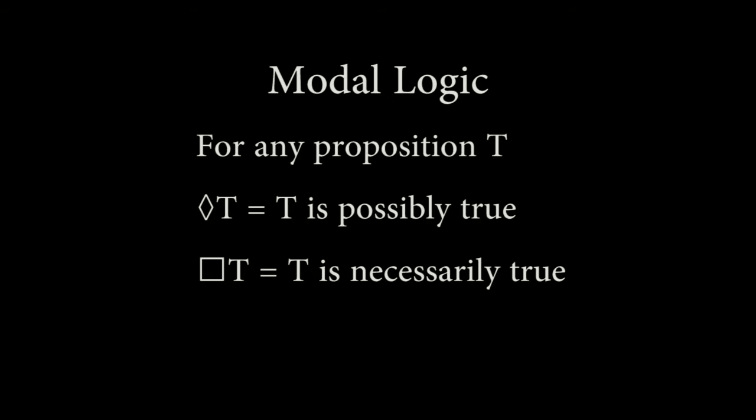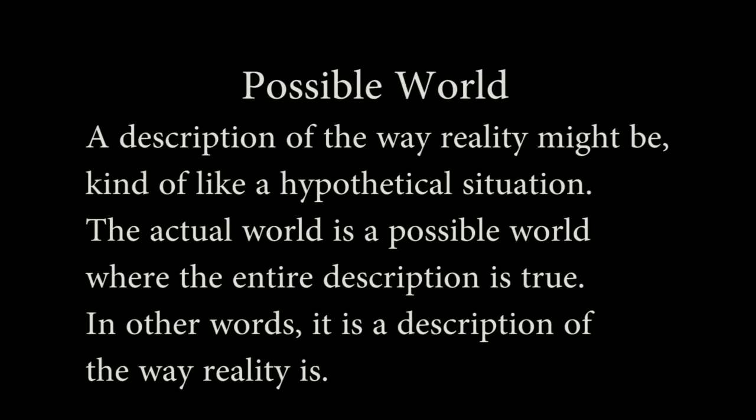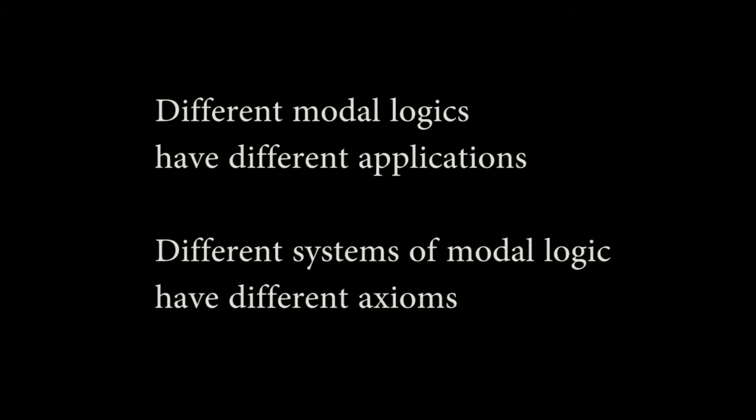Modal logics use a semantic called possible worlds. A possible world is a description of the way reality might be, kind of like a hypothetical situation. The actual world is a possible world where the entire description is true — the description of the way reality is. There are different systems of modal logic where the axioms are different, and also different modal logics where the application is different. The term possible and the term necessary have different meanings in different modal logics. So the first question is, what modal logic are we using for the ontological argument, and which of the systems should we use?